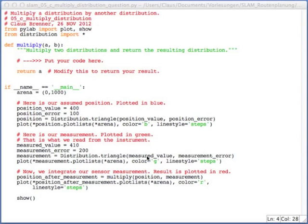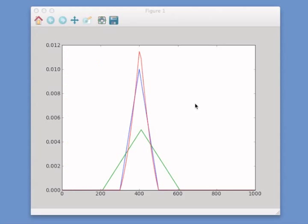So, the position is plotted in blue, the measurement in green, and the resulting distribution in red. And if you implement that correctly, you should see the following. So, this is the prior, and this is the measurement.